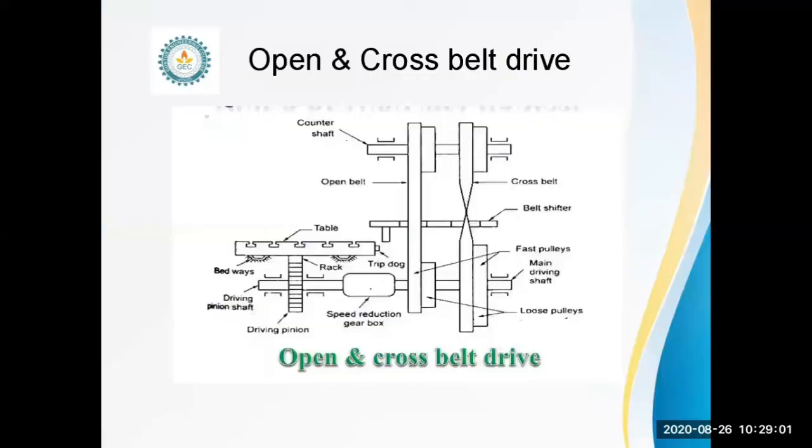The first one is open and cross belt drive. Why is this mechanism used? It is used for smaller capacity machines. The table of this machine is moved by gears and rack attached to the underside of the table.